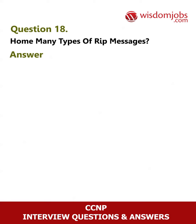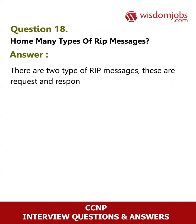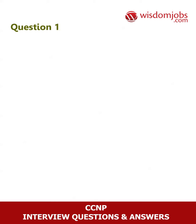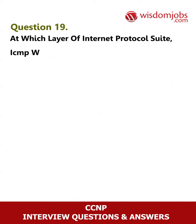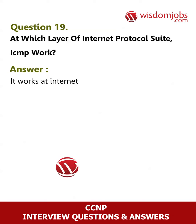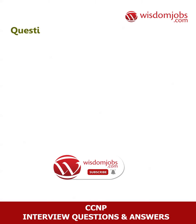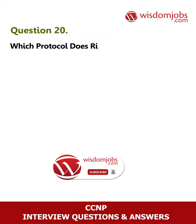Question 18: How many types of RIP messages are there? Answer: There are two types of RIP messages — these are request and response. Question 19: At which layer of the internet protocol suite does ICMP work? Answer: It works at the internet layer.